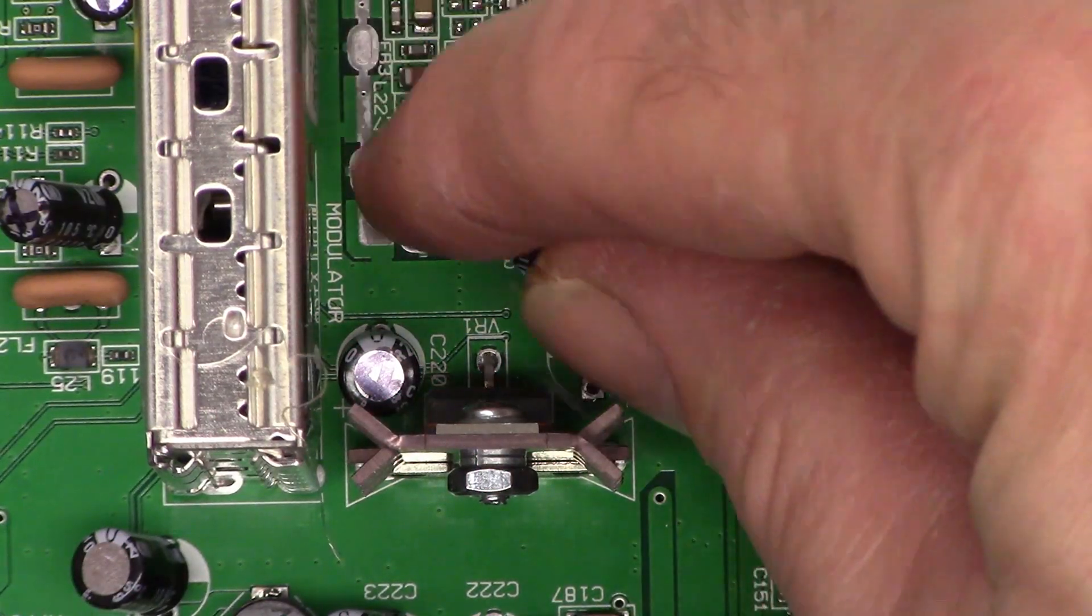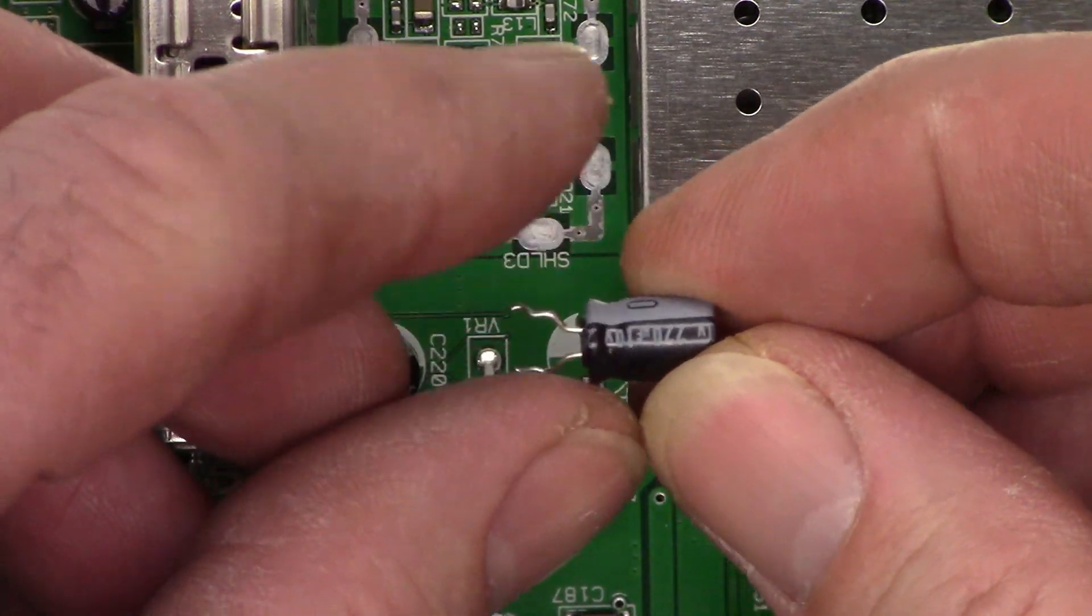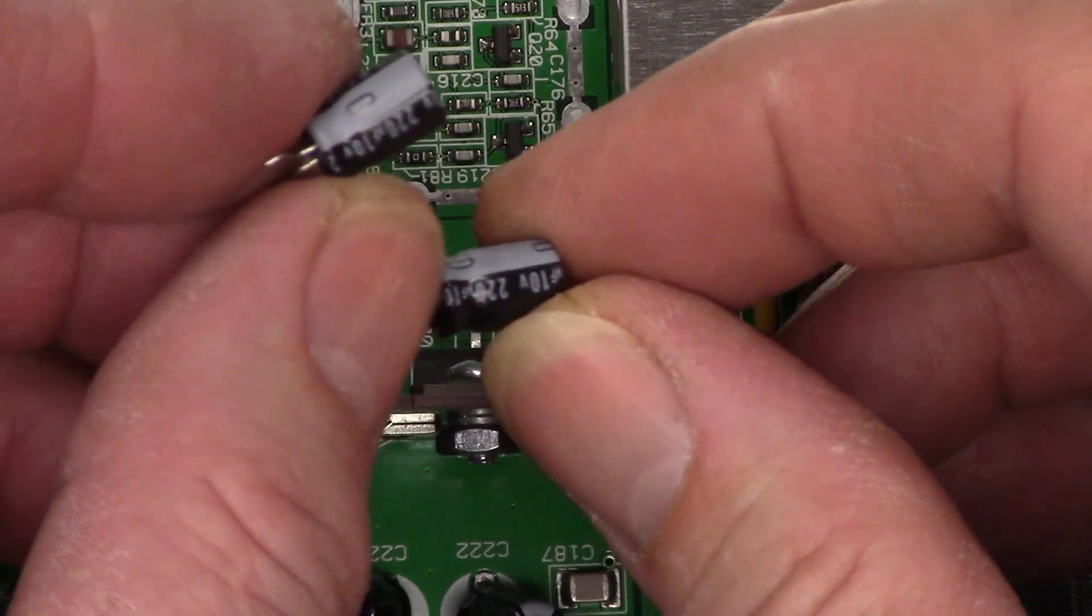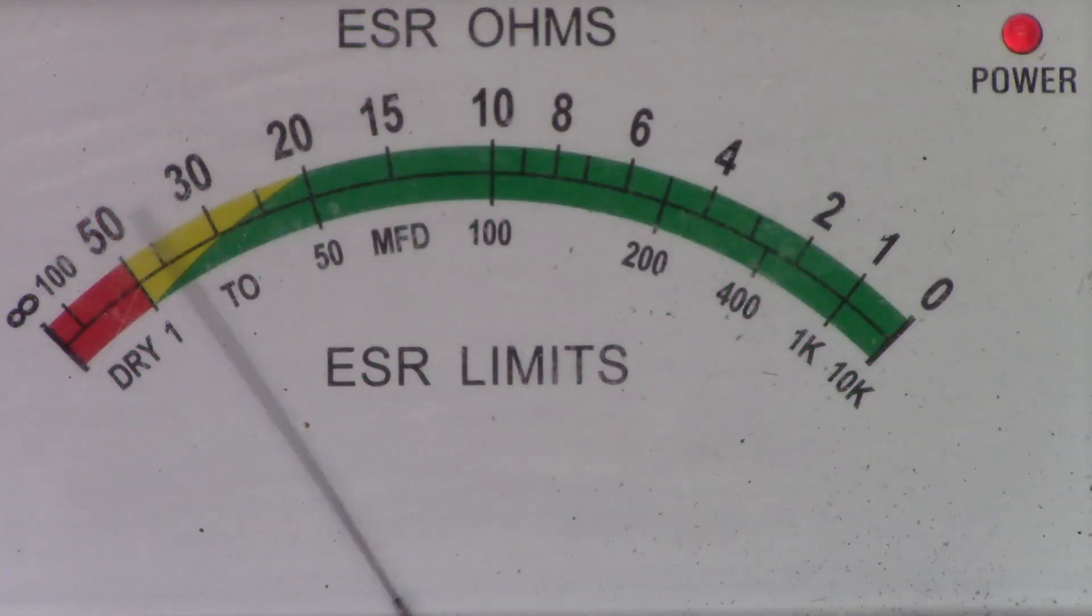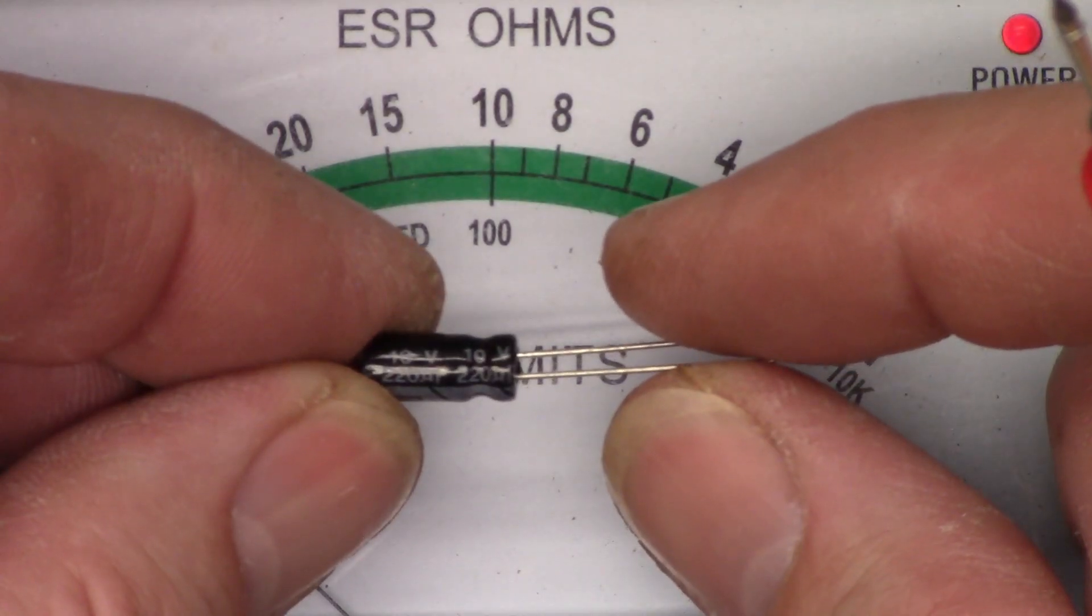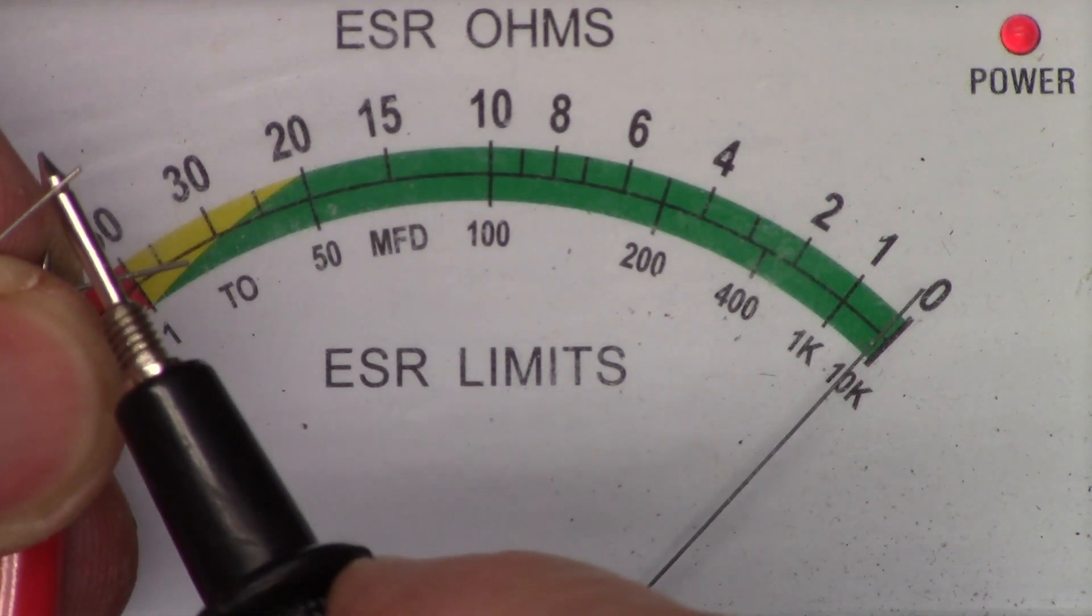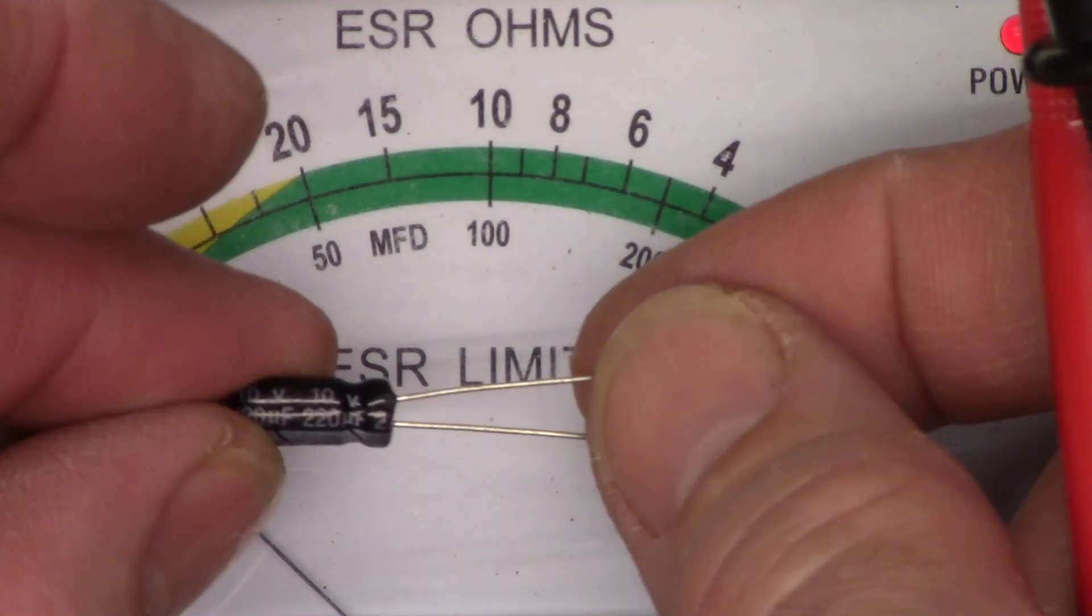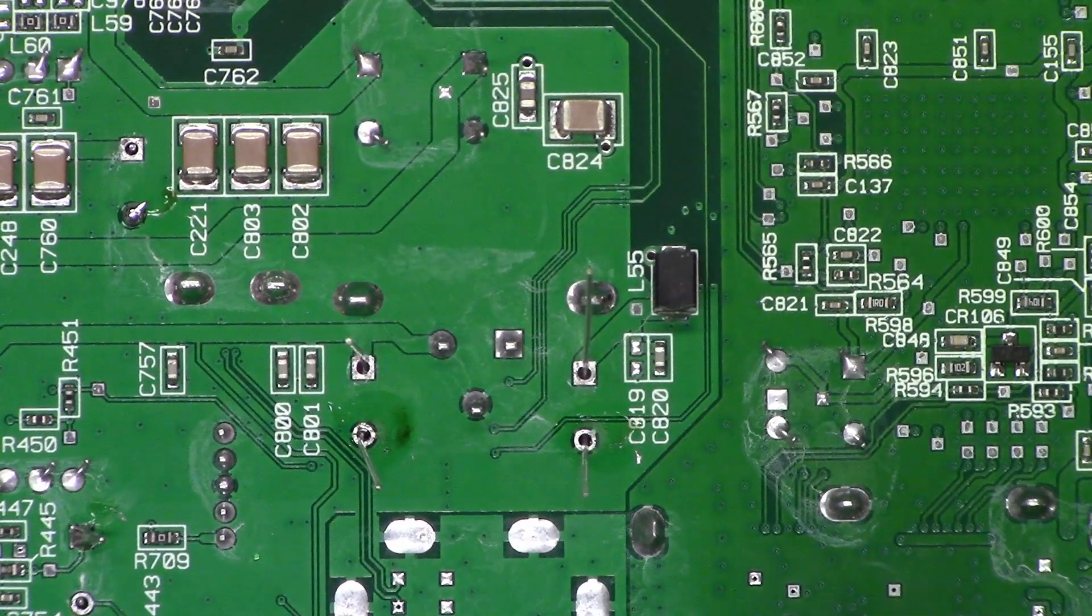C182 and C220 are the input and output filter caps. 220 at 10 volts. Let's ESR those out of the circuit. Here is the first one. It's 1 1⁄4 ohms, that's definitely bad. Second one, closer to 1 1⁄2 ohms, definitely bad. By comparison, here's a brand new 220 at 10, just under a quarter ohm. And here's the second 220 at 10, another quarter ohm. We'll go ahead and solder those in place.